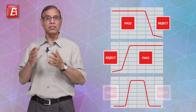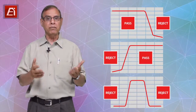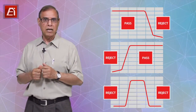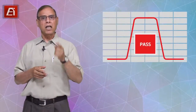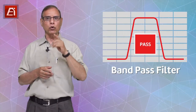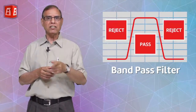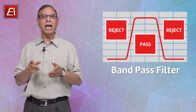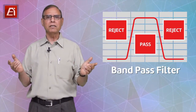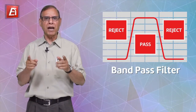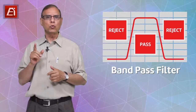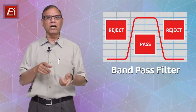In contrast, band pass filters reject signals both below and above your system's operating frequency band. They essentially do two things: they pass a band of frequencies that are desirable for your system, and they reject frequencies above and below your operating band. Many communication systems operate at specific bands, and band pass filters are necessary to remove interference above and below that operating band.